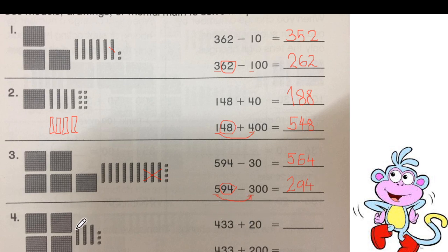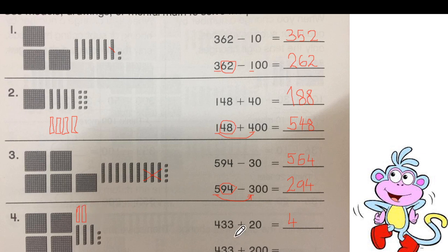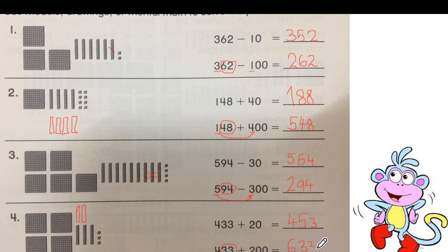Let's go to the last one. 433 add 20. 20 means 2 tens — you can draw 2 tens extra. When you are adding, you are adding extra tens. What happens to hundreds? It will stay the same — 4 hundreds. Tens will change: we will add 1, 2, 3, 4, 5 — it will become 5 tens now. What happens to ones? 3 stays the same. Now let's use mental math for addition of hundreds. 4 plus 2 equals 6. When you are adding hundreds, what happens to tens and ones? They will stay the same — you can copy them and you are done.